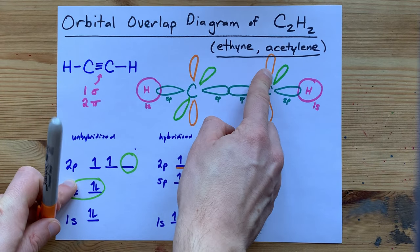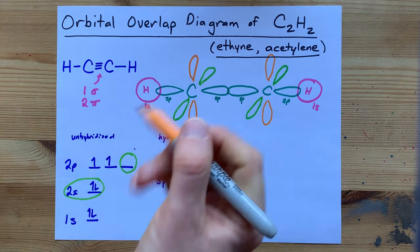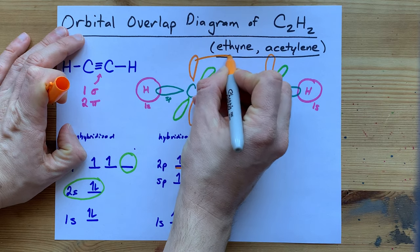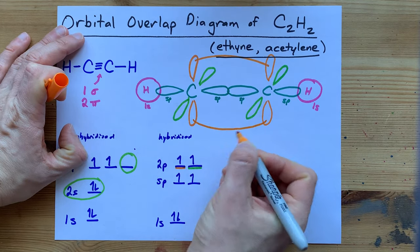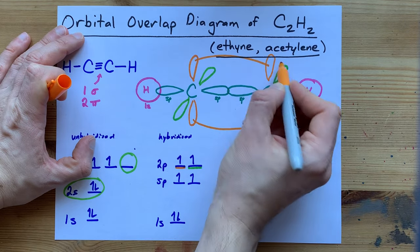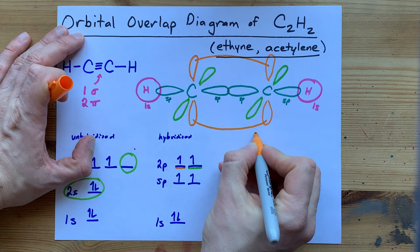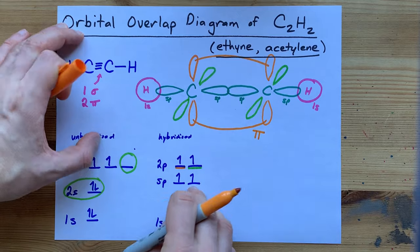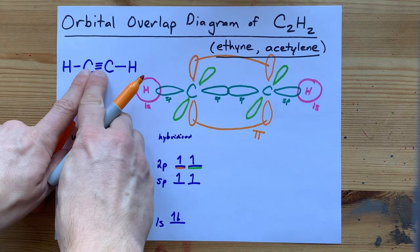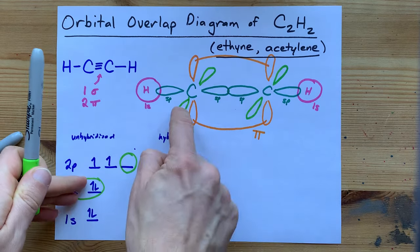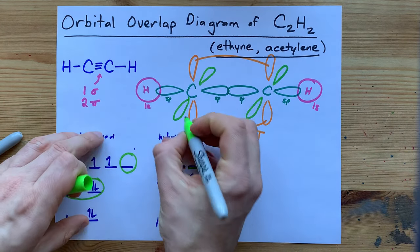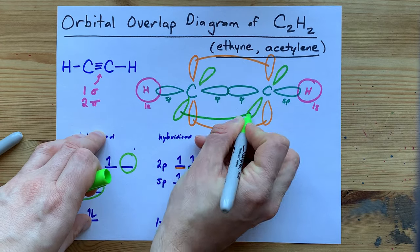I'd like to point out that these two 2p left-over orbitals are technically overlapping. We draw that by connecting those lines. These two orange lines together make one pi bond. Perhaps it's the double bond between the carbons.